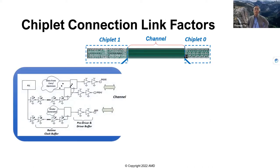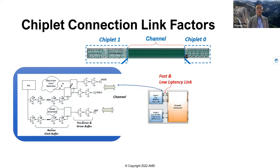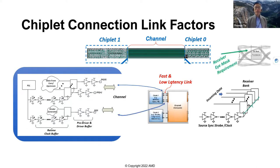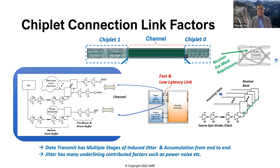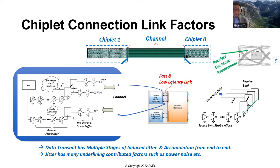Starting from the left-hand side, chiplet number one is going to transmit the signal through the channels. We want to make sure the link is as fast as possible with lowest latency. We're going to receive the signals solidly to ensure we are able to manage the jitter. The data transmit has multiple stages, starting from a clocking source — focusing on the interface I/O. The jitter is going to be induced by the power noise and accumulated along the way, divided in terms of power tone and amplitude.